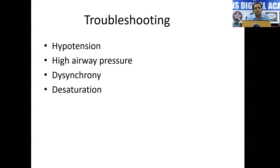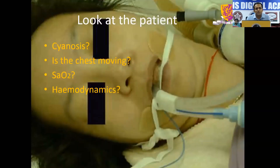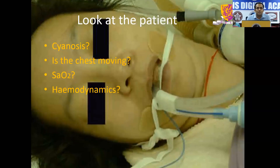First thing is to look at the patient. Before we embark on doing any intervention, we need to essentially look at the patient. Is the chest moving? What is the saturation? And how are the hemodynamics? These are the things which will tell the urgency of the problem. Next, see whether the problem is urgent — and if the problem is urgent, is it a patient problem or an equipment problem?